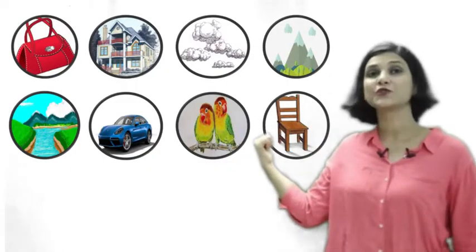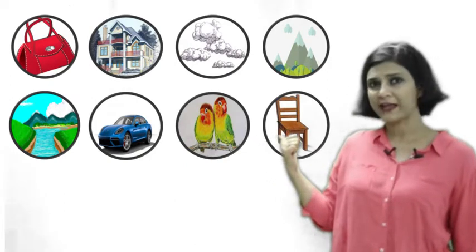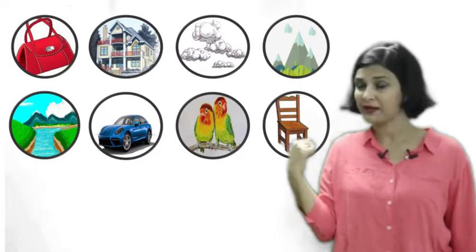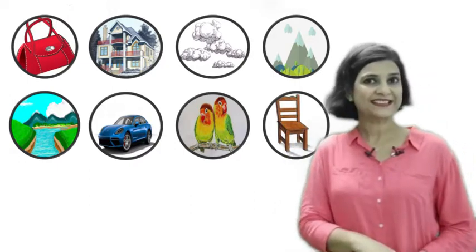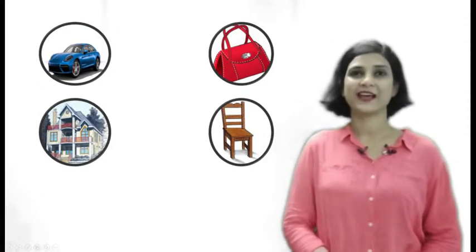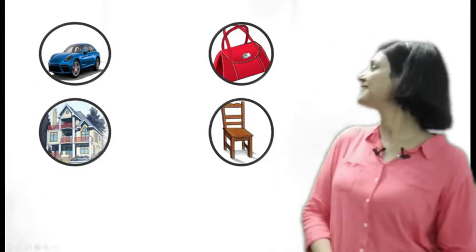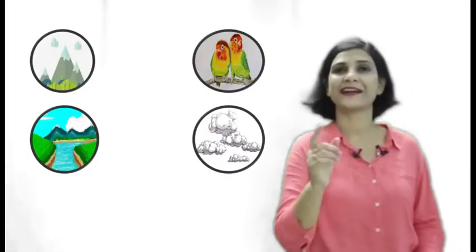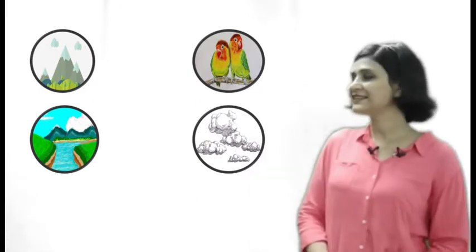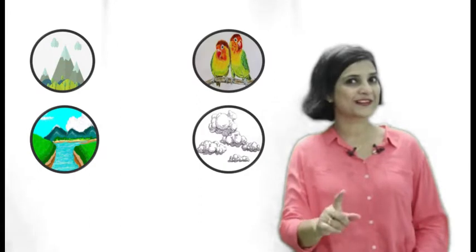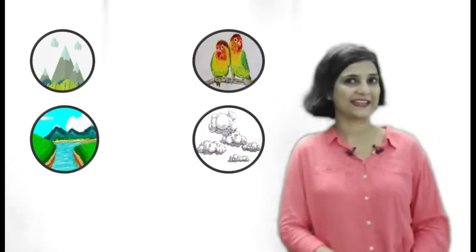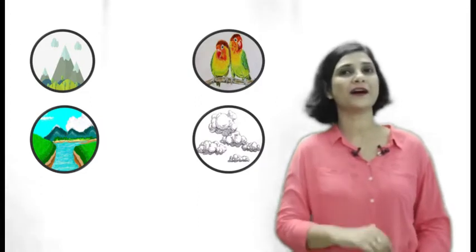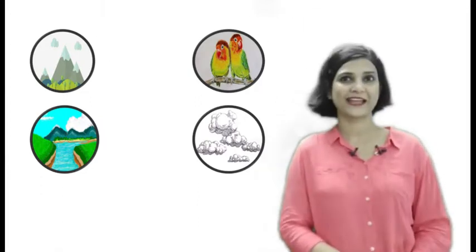There are certain things on your screen that you see almost every day — can you identify how many of these are man-made and how many are natural? Yes, you're right: house, car, purse, and chair are man-made things. And what about natural things? Mountains, river, clouds, and birds — these are made by nature. They are a gift to us by nature, and we cannot make them; only God can make them.